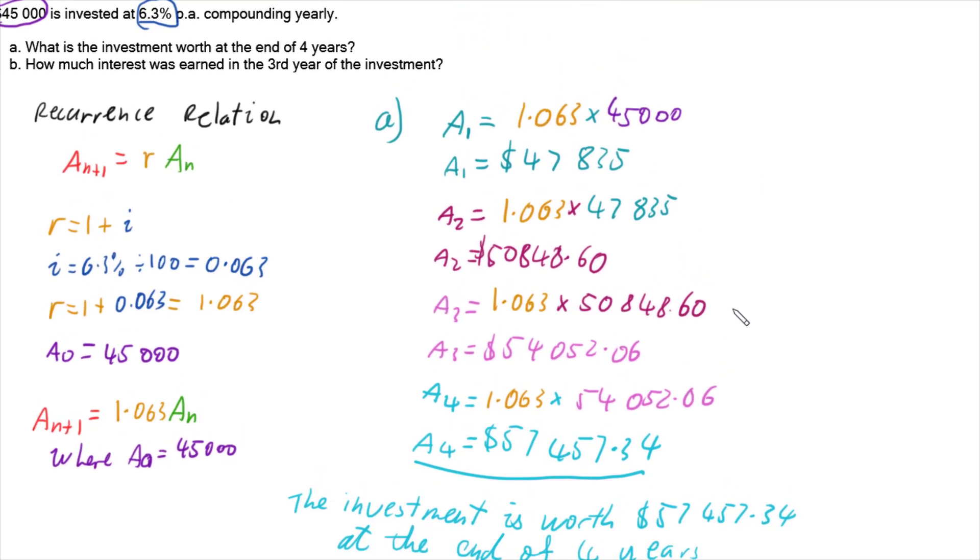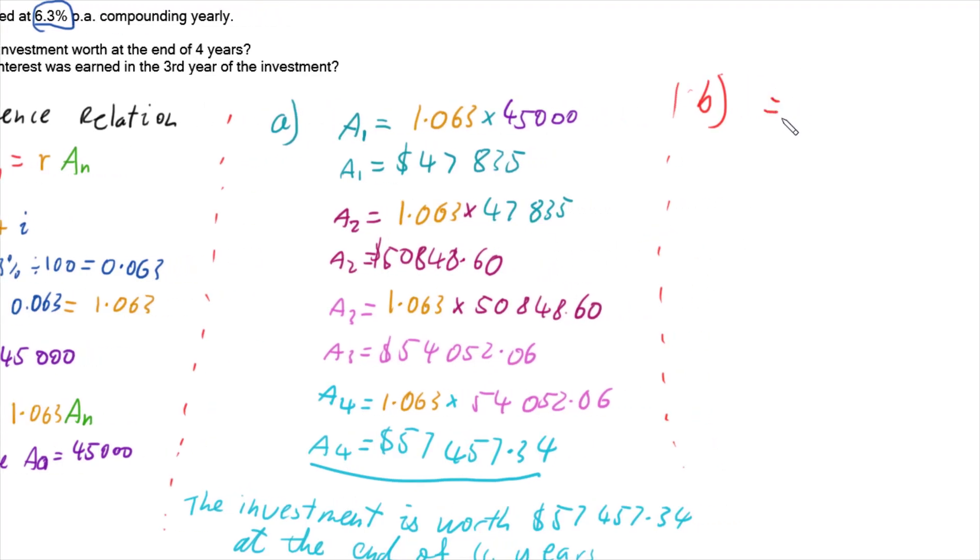So now, to work out part B, where part B is asking us for how much interest was earned in the third year of the investment. So our third year starts at the end of the second year and finishes at the end of the third year. So we want to know how much interest was gained between the end of the second and the end of the third.